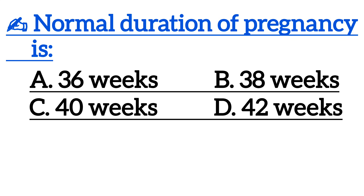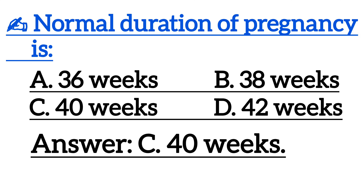Next one is: the normal duration of pregnancy is? Correct answer is option C, 40 weeks.